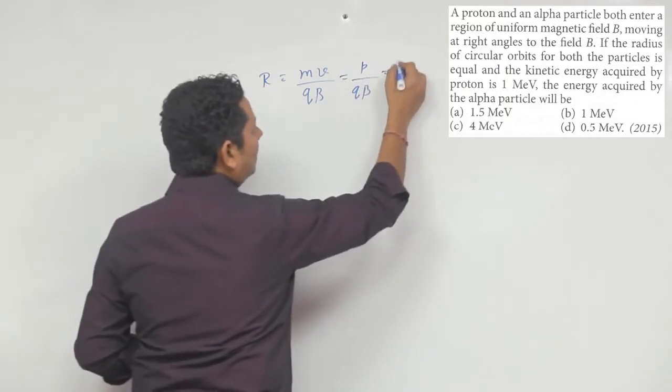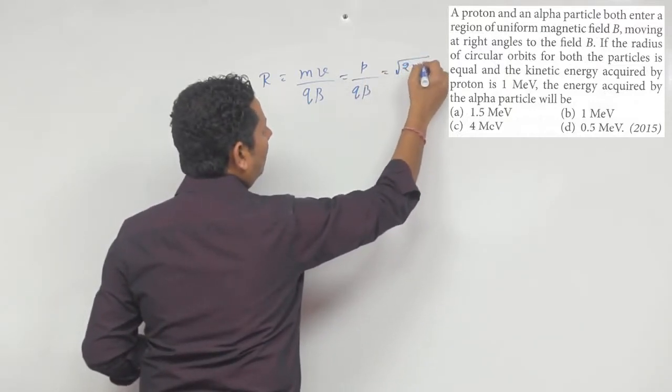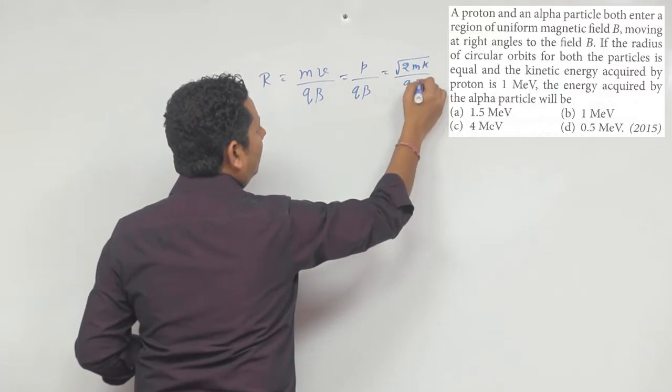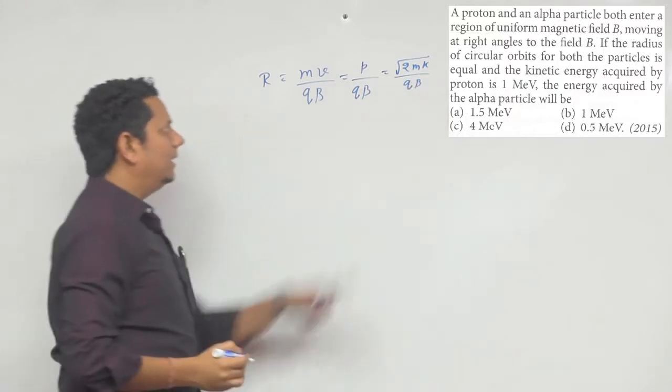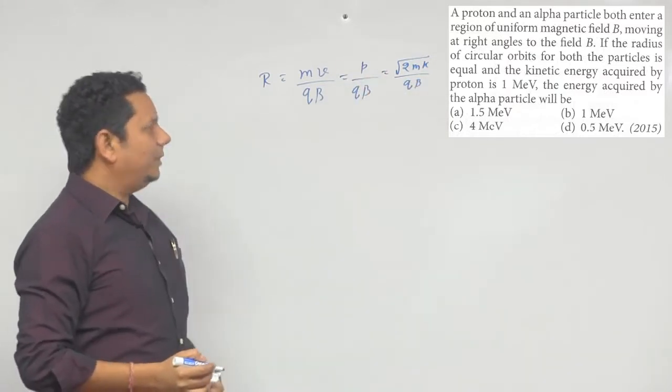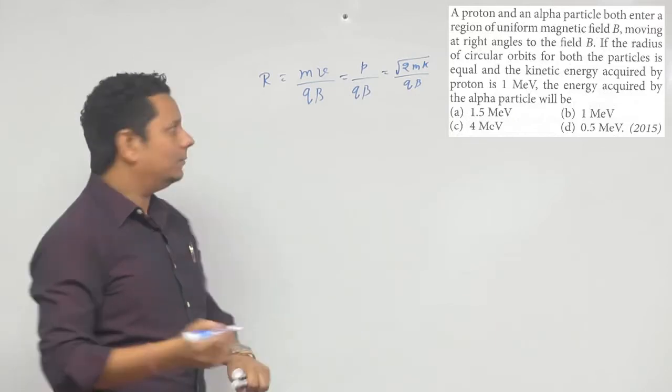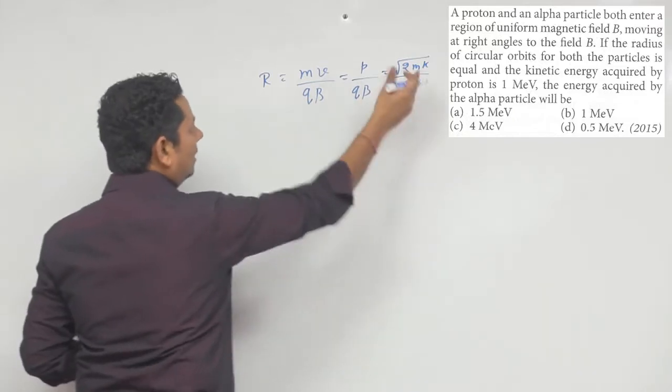Isi radius ko hum ek aur format mein likh sakte hain: √(2mK)/qB, jahan K aapki kinetic energy hai, m aapka mass. So p ko hum is term mein yahan pe likh sakte hain. Based on this agar hum dhundhe,